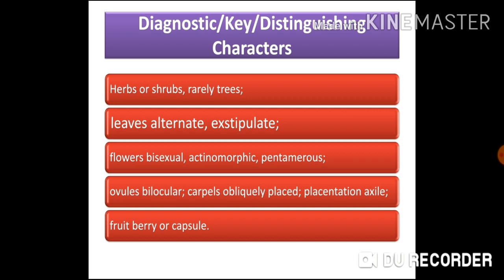The diagnostic characters of family Solanaceae are as follows. The first character: herbs or shrubs, rarely trees. The second character: leaves are alternate — the phyllotaxy is alternate, meaning on each node a single leaf arises — and leaves are without stipules, that is, exstipulate.